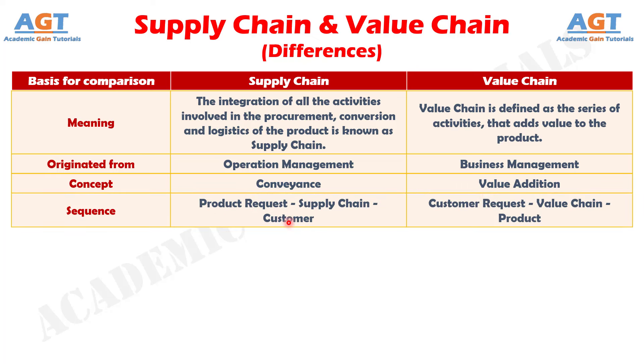Number 4: the order of supply chain begins with product request and ends when it reaches the customer, unlike value chain, which begins with the customer's request and ends with the product.